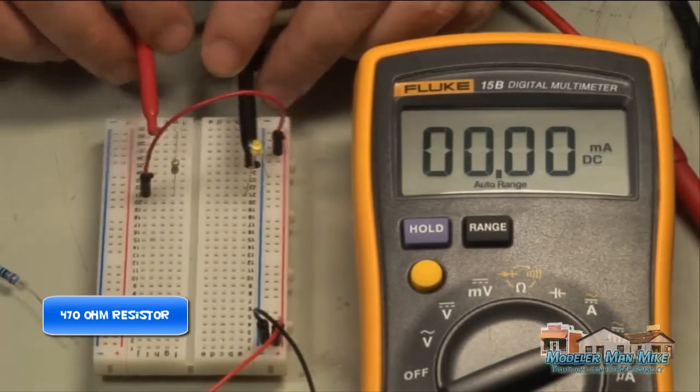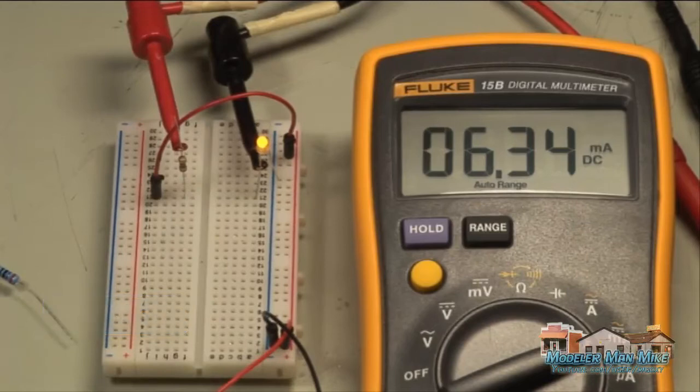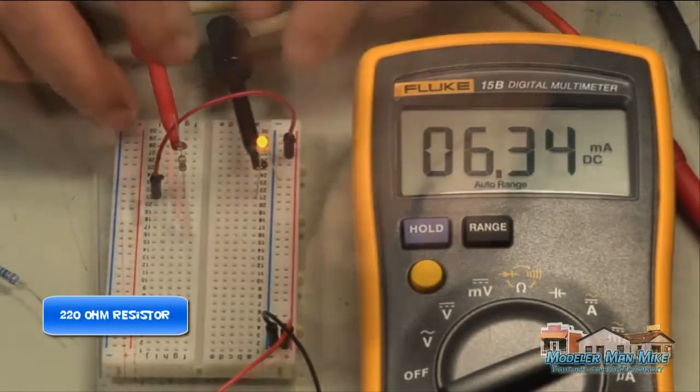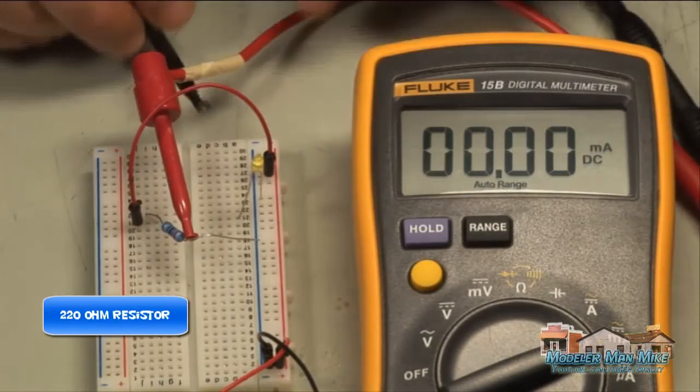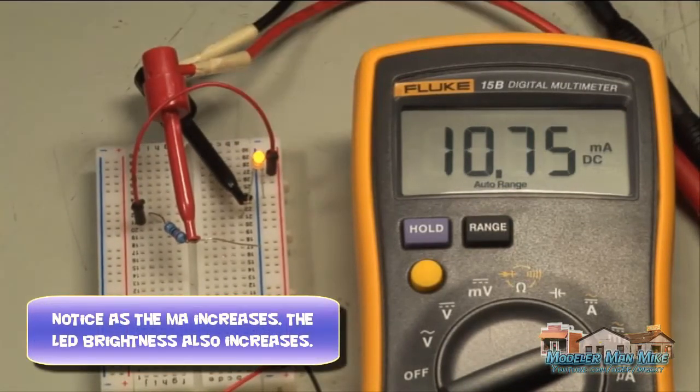So I plug in a 470 ohm resistor here and it gets 6 milliamps. Here's a 220 ohm resistor. So I'm getting lower here. You see the amperage milliamps move up. So it's a 10-point milliamp reading.